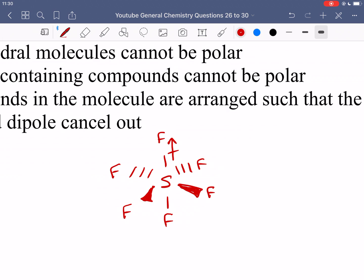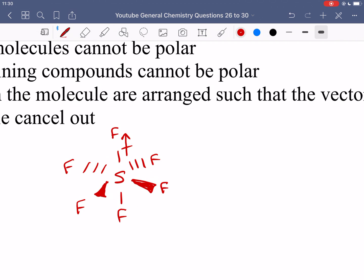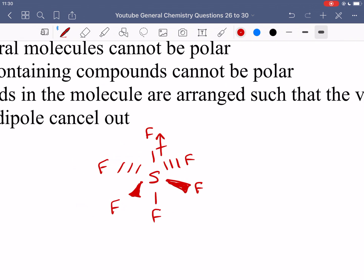So we have those four in the plane that cancel each other out, and then we have one at the top, one at the bottom, those guys cancel each other out. So it's because all the dipoles ultimately end up canceling each other out, that's why this molecule is not polar.